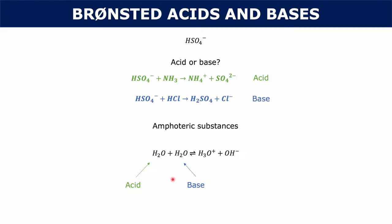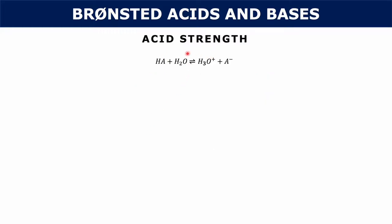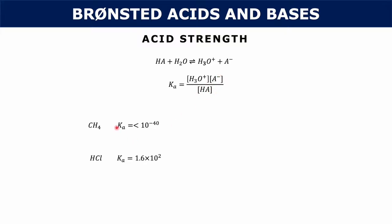Now let's talk about the strengths of acids in a quantitative way. The general formula of an acid dissociating is HA reacting with water to produce the hydronium and the A- ion. Since this is an equilibrium, we can write the equilibrium expression as the concentration of hydronium times the concentration of A- over the concentration of the acid. This is Ka.